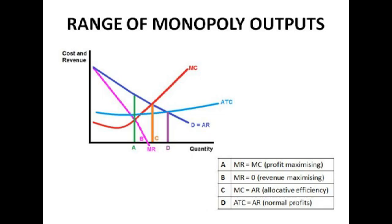Allocative efficiency occurs when you're producing at the point where marginal cost is equal to average revenue — also known as MC pricing. For allocative efficiency, the marginal cost of the last unit equals the marginal benefit gained from producing it. And finally, point D is when average total cost equals average revenue, which is when a firm makes normal profits — called average cost pricing. Basically, the money paid to produce the product is exactly the same as the money charged. A monopoly would never do this unless it wanted to force other firms out of the market. If you look at the difference between A and D, D is where you'd be producing in perfect competition — where everyone's making normal profits. Look at how much less output the monopoly is producing at A.